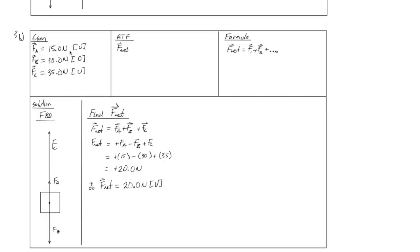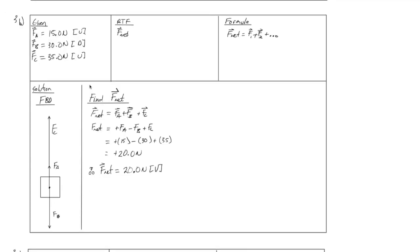Part B. In part B, we have three vectors. FA, FB, FC, which are 50 newtons up, 30 newtons down, and 35 newtons up. These vectors are also collinear, which means that we can use straight vector addition. So when we take a look at the free body diagram, if you notice, the cumulative vectors in the upward direction are larger than the single vector that is in the downward direction.